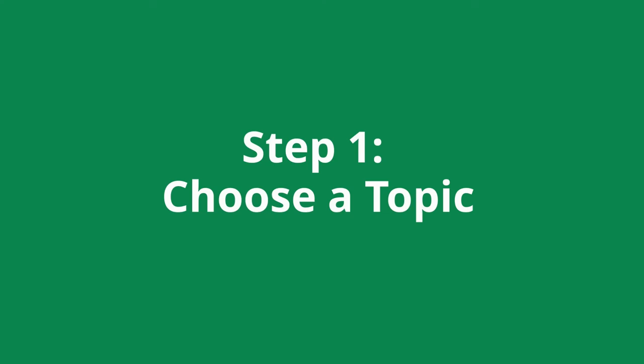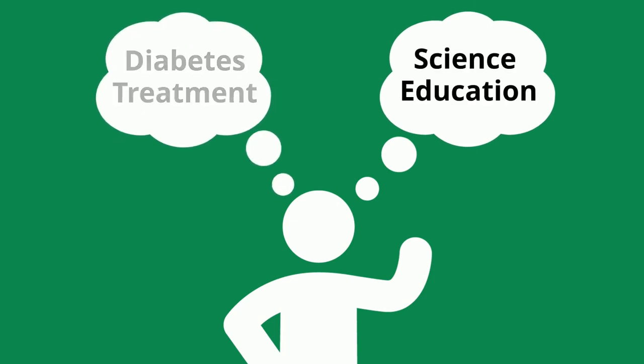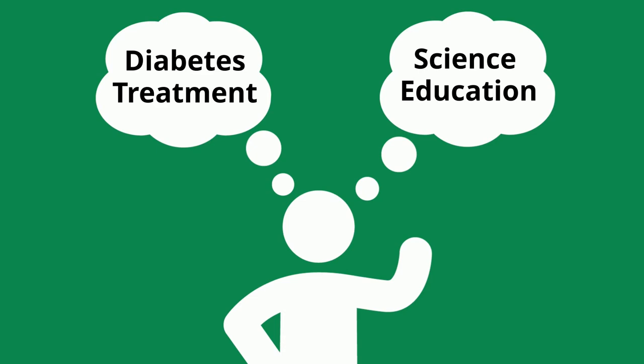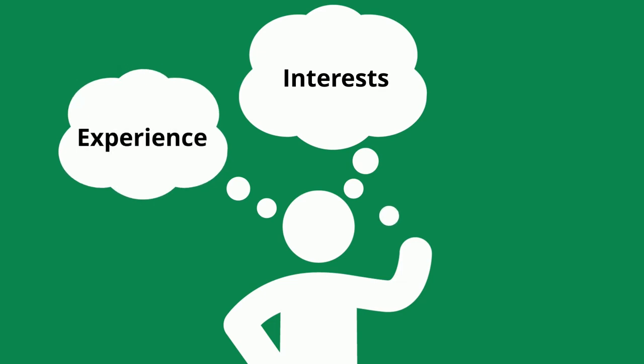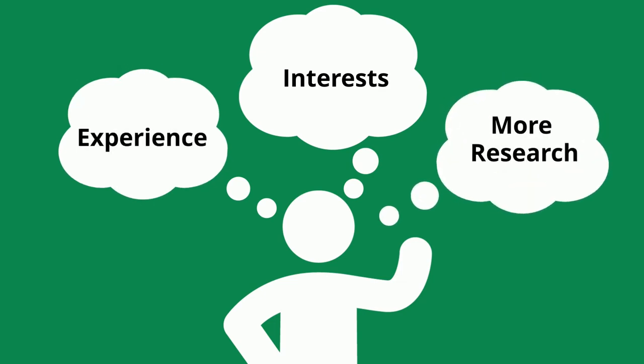Step 1: Choose a topic. To select a topic, start by thinking of aspects of your field that might be interesting to pursue, such as science education or diabetes treatment. You can also try strategies like thinking of topics that interest you or where you have experience, or subjects where you think there's a need for more research.